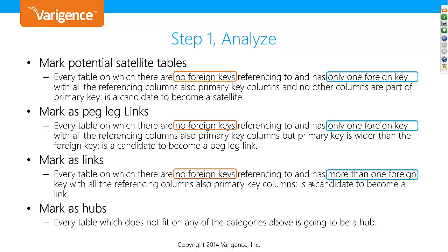I needed to identify in Biml whether any tables are referencing this table, count how many foreign keys this table has going out, look at the primary keys, and see the correlation between the number of primary key columns and foreign key columns. Based on those counts, the algorithm determines whether a table is a hub, link, or satellite. Once I comprehended what I needed to do, I created a little Biml script, and you'll be very pleasantly surprised at how little Biml code was needed to do all of that.